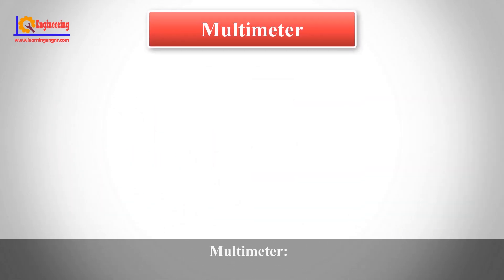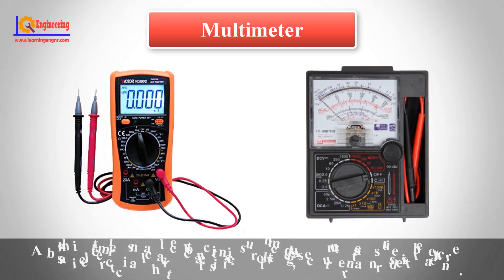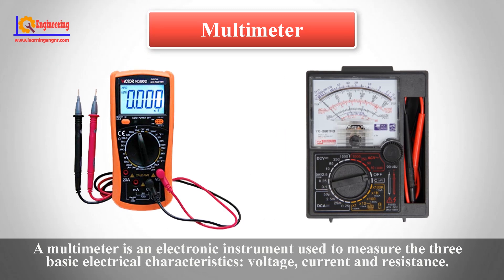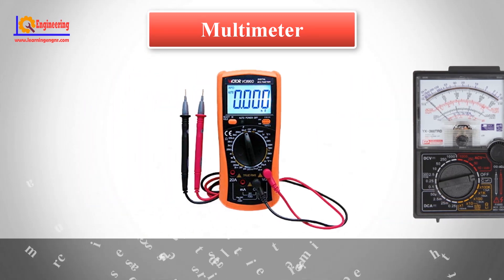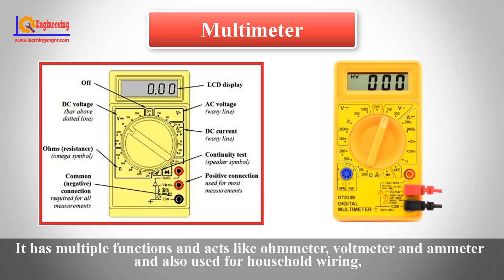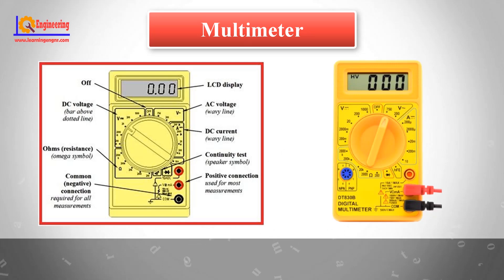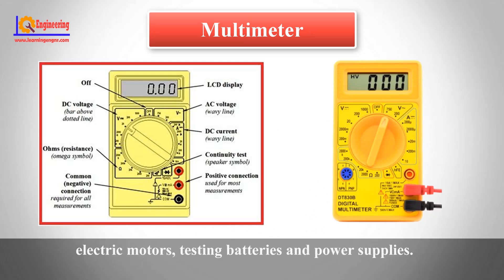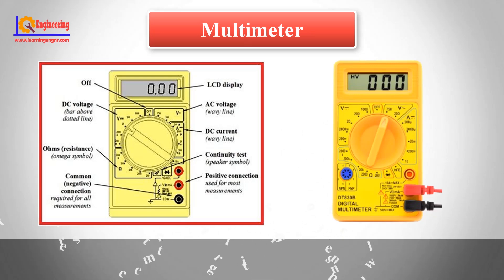Multimeter: A multimeter is an electronic instrument used to measure the three basic electrical characteristics — voltage, current, and resistance. It has multiple functions and acts like an ohmmeter, voltmeter, and ammeter, and is also used for household wiring, electric motors, testing batteries, and power supplies.